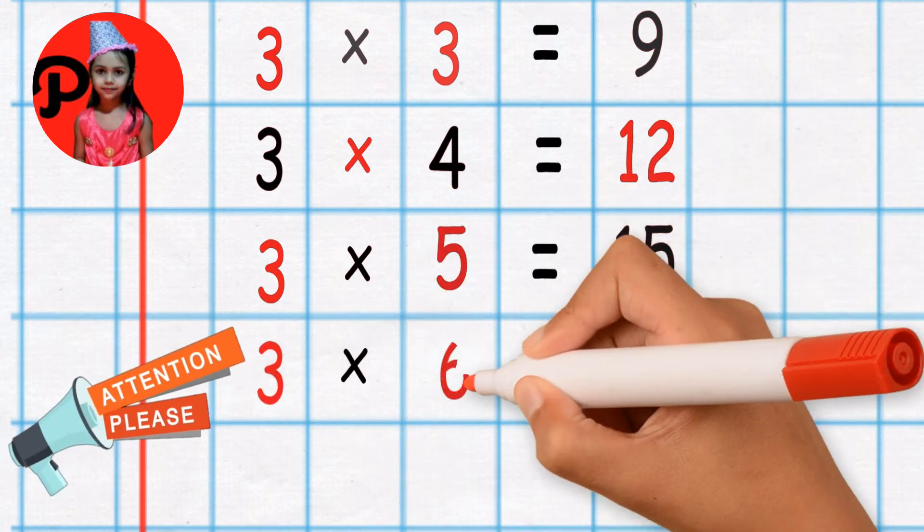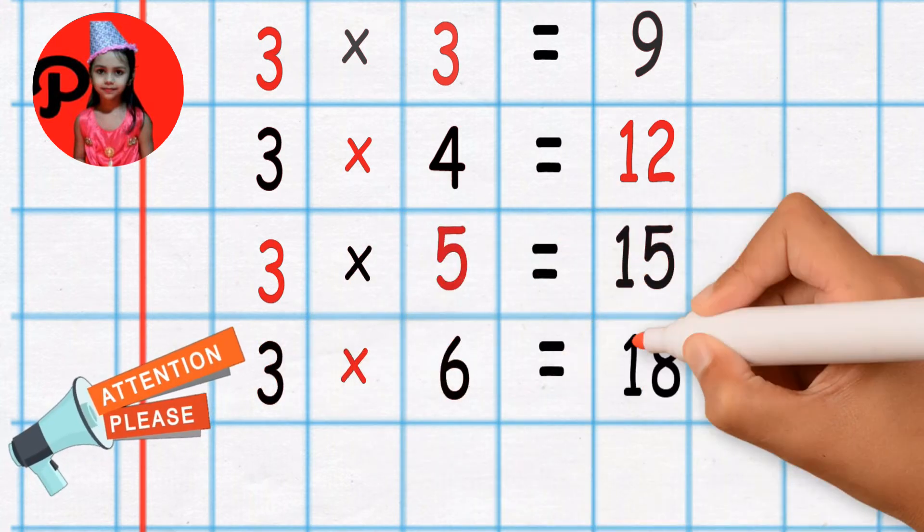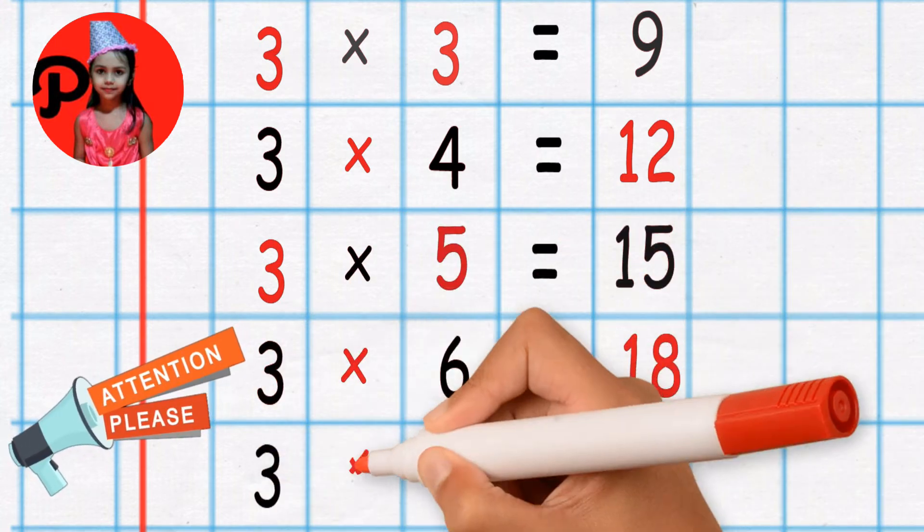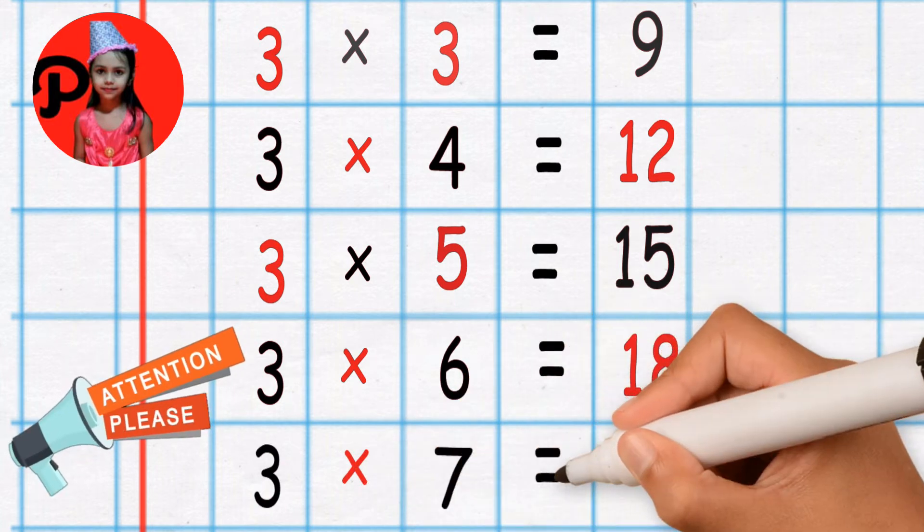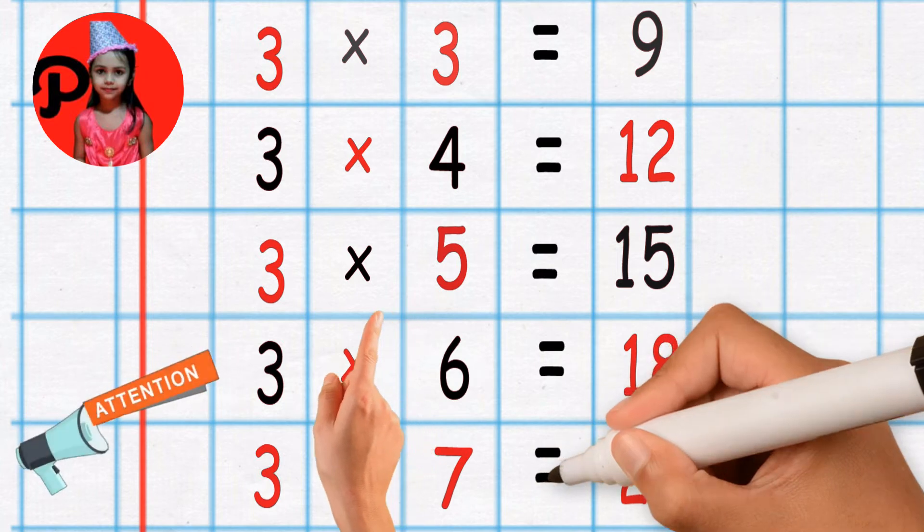3 6 are 18. 3 6's are 18. 3 7's are 21. 3 7's are 21.